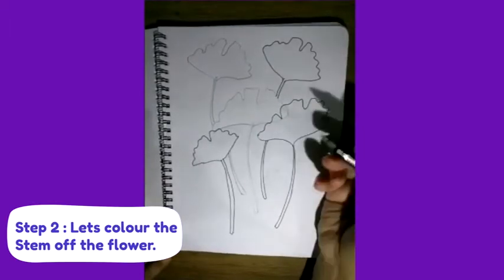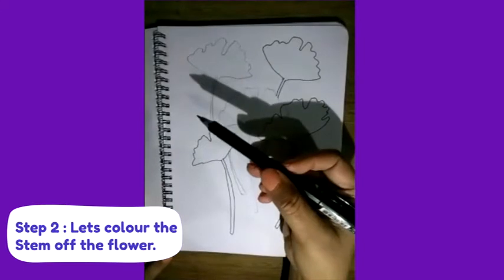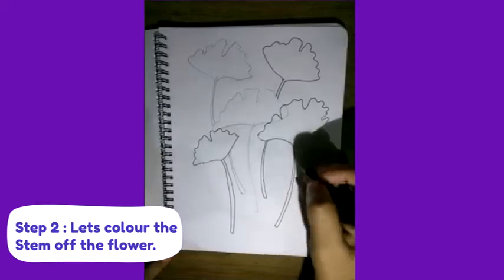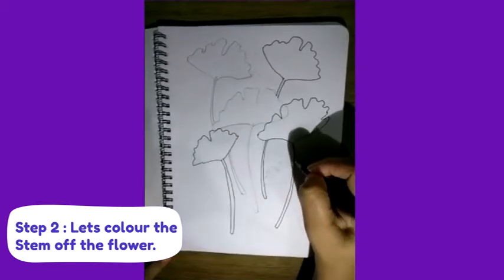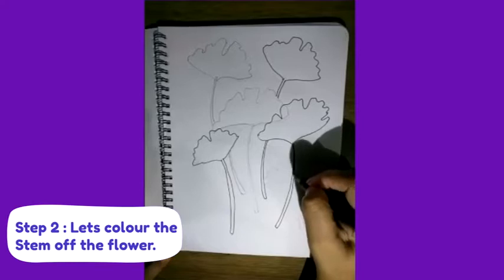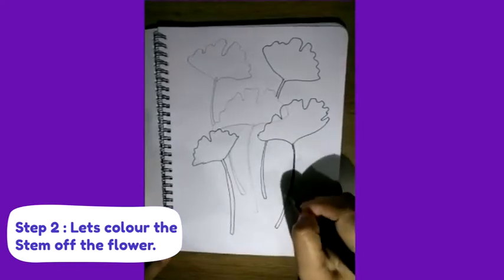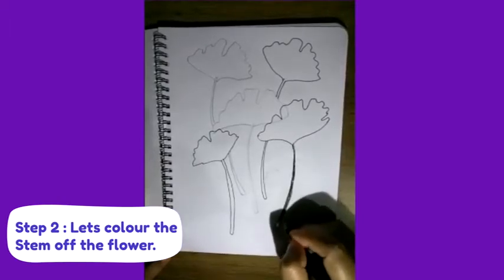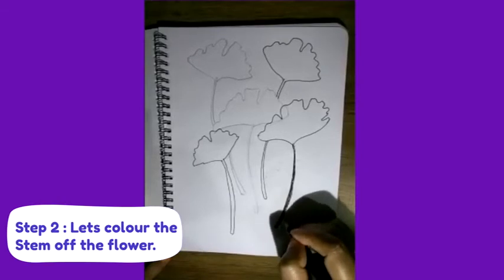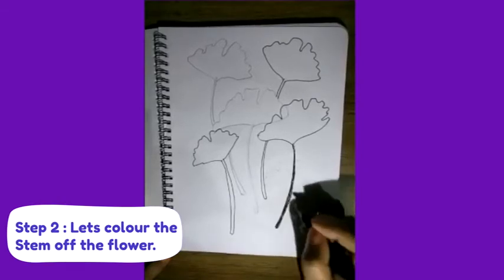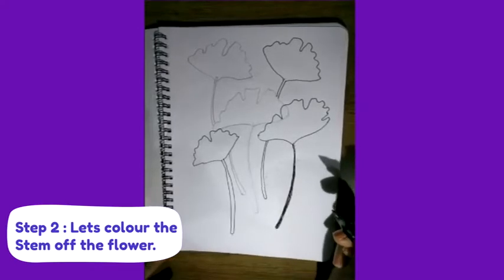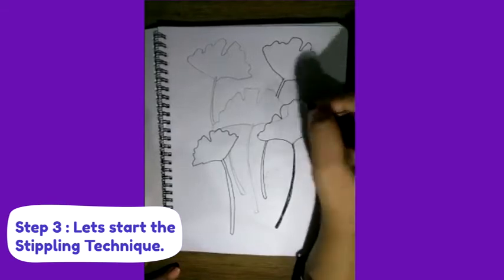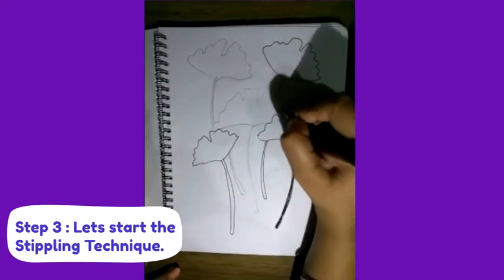Now what will we do - we take a black pen, black gel pen or ballpoint pen, whichever you are having, and I will color the stock with my pen. That's perfect. Now we will start the stippling technique.